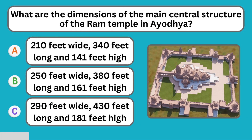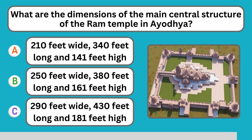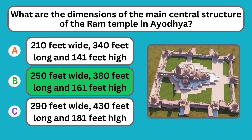What are the dimensions of the main central structure of the Ram Temple in Ayodhya? 250 feet wide, 380 feet long, and 161 feet high.